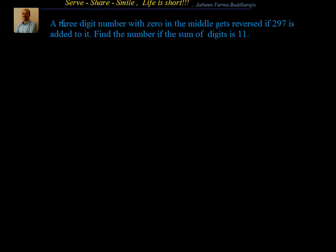There is a three-digit number, and it's having zero in the middle. Let us say this zero is in the middle, and the digits are x and y — so the number is x0y. That's a three-digit number.